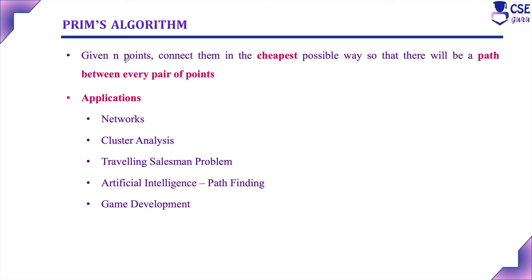In Prim's algorithm, n points will be given. The algorithm needs to connect these n points in the cheapest way possible so that there will be a path between every pair of points. Here, points are nothing but the vertices in the given graph.